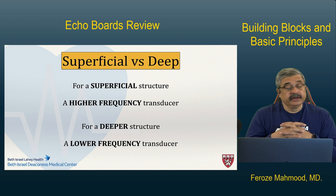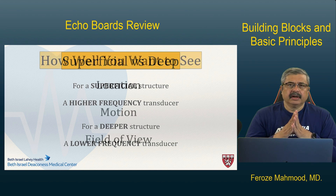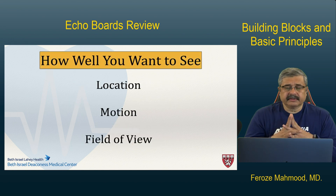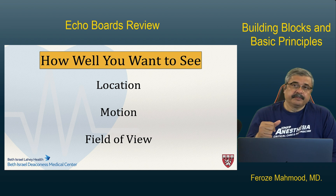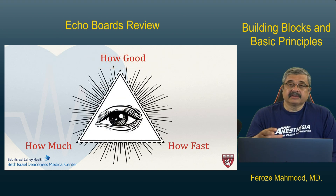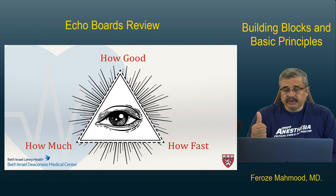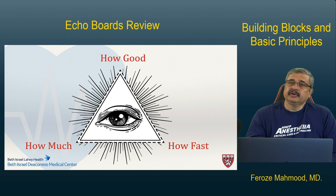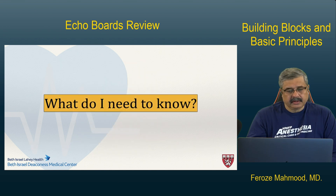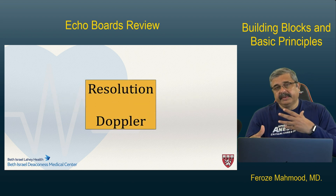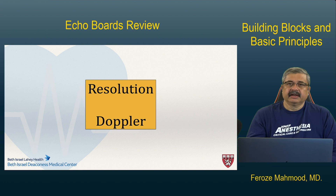For a superficial structure, use a higher frequency transducer; for a deeper structure, use a lower frequency transducer. The next question is how well you want to see it — that's resolution, your position in space or in time. One is location, second is motion, and the third is field of view. These are the three fundamental principles of what I call the holy triangle of imaging: how good you want to see it, how much you want to see it, and how fast you want to see it. You also need to know Doppler — the ability to appreciate whether motion is going towards you or away from you.